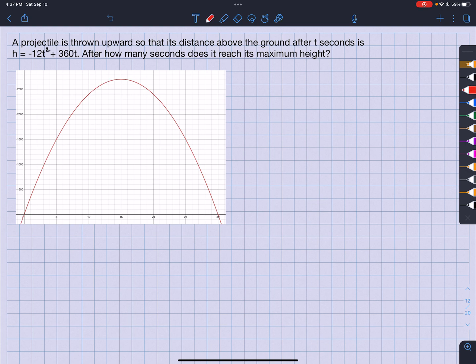As I can see here, this right here would be my maximum height. This is called my maximum height, which is also known as my vertex. So if that's my vertex, how do I get my vertex from h equals negative 12 t squared plus 360 t?